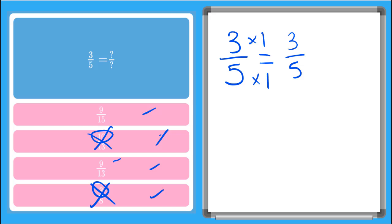And these ones both have 9s in the numerator. So if we have 3 fifths, and I need to get a 9 up here, that means I had to multiply my numerator by 3. So if it's equivalent, I have to also multiply my denominator by 3. 5 times 3 gives me 15. So there's our answer right there.